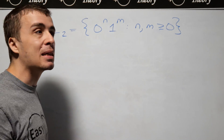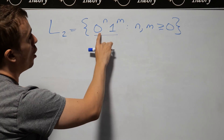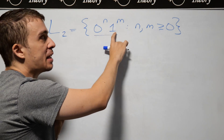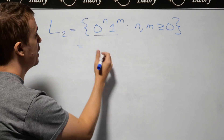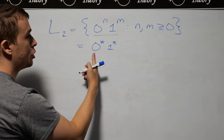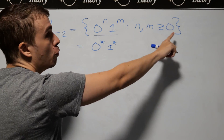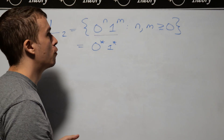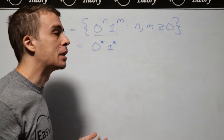Every string in this language always has some number of zeros at the start, and then some number of ones at the end. We can actually write a regular expression for this: zero star one star, because it's just some number of zeros — any number, since there's no restriction other than being at least zero — followed by some number of ones. But what we're after is a context-free grammar.